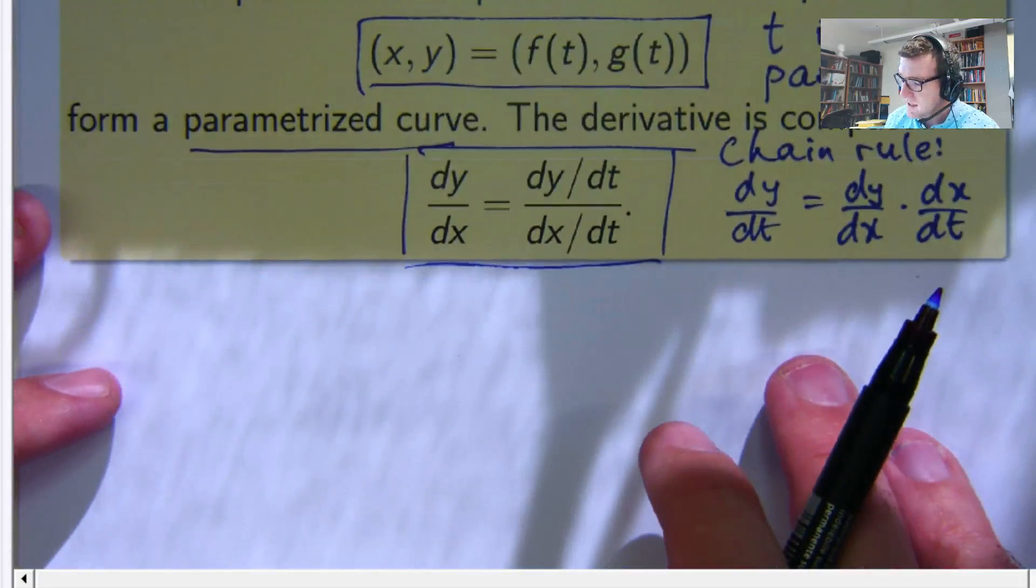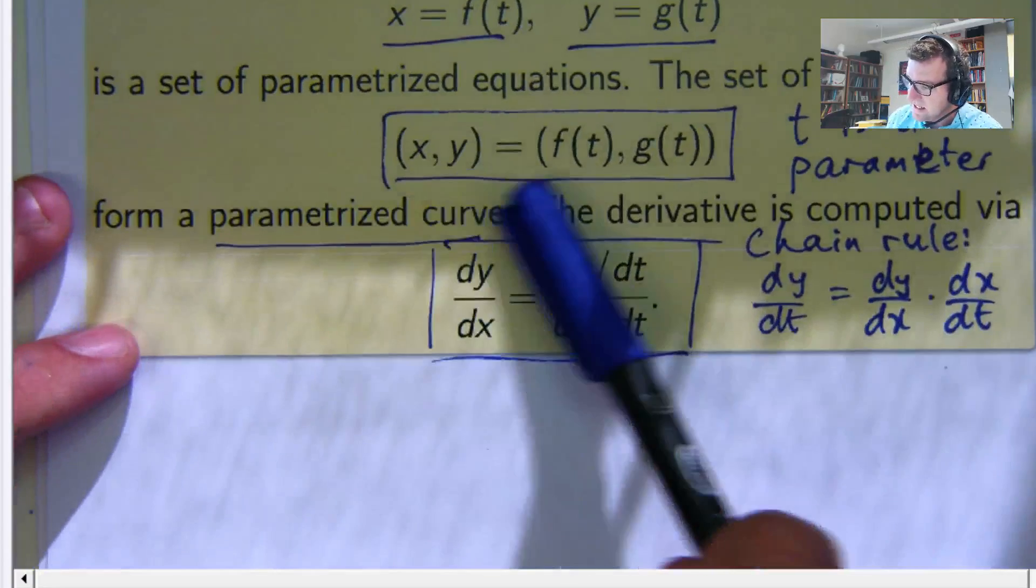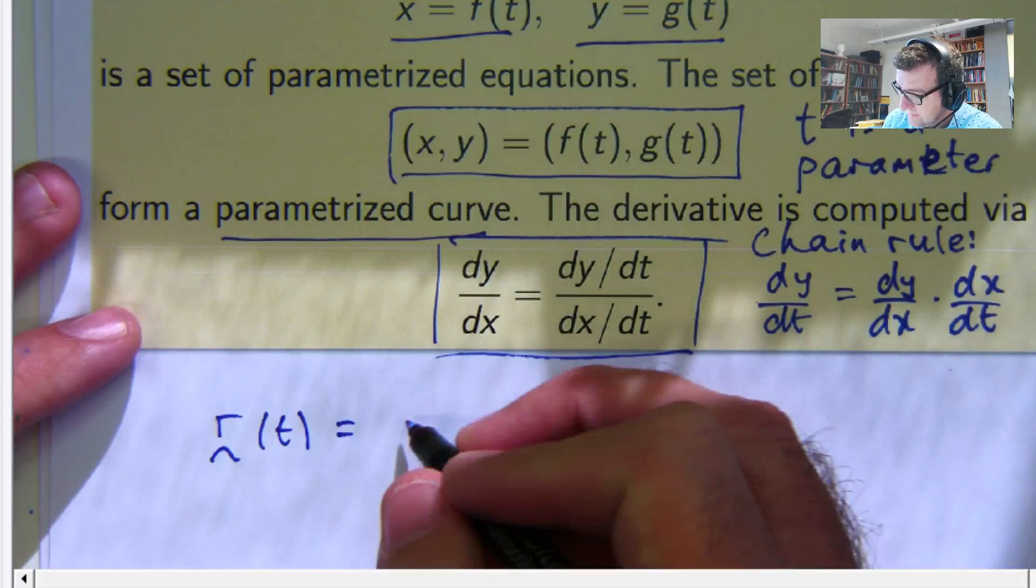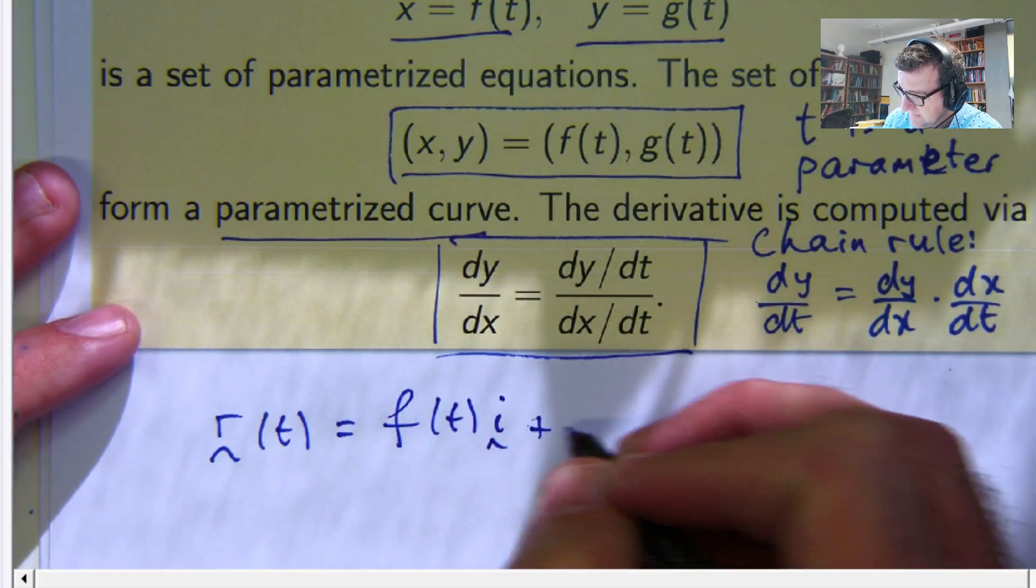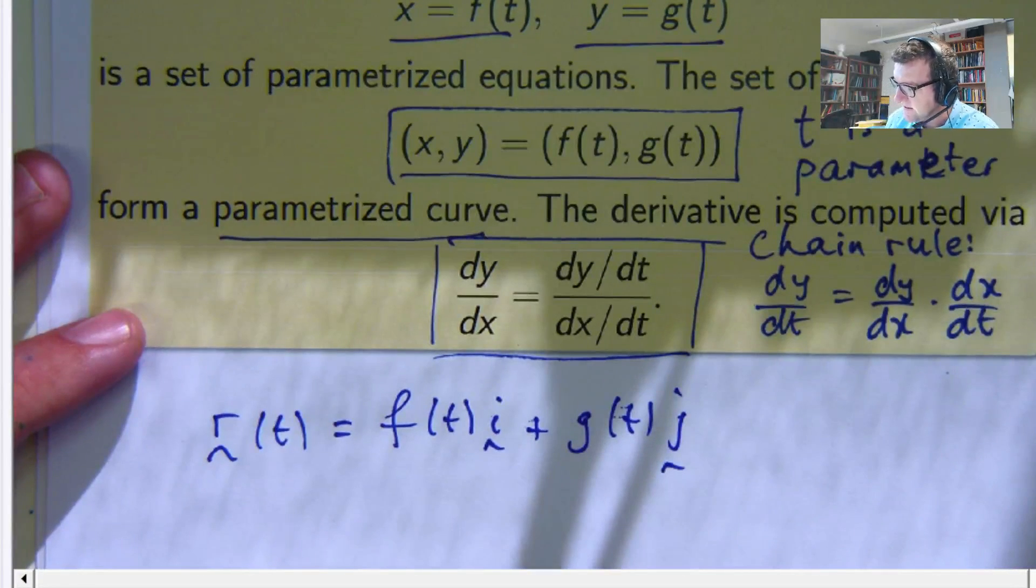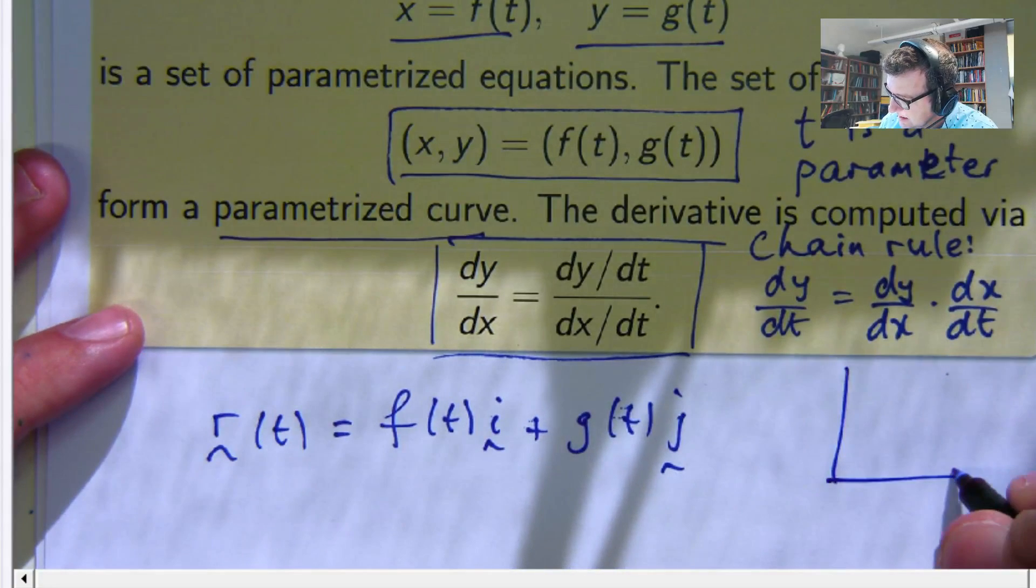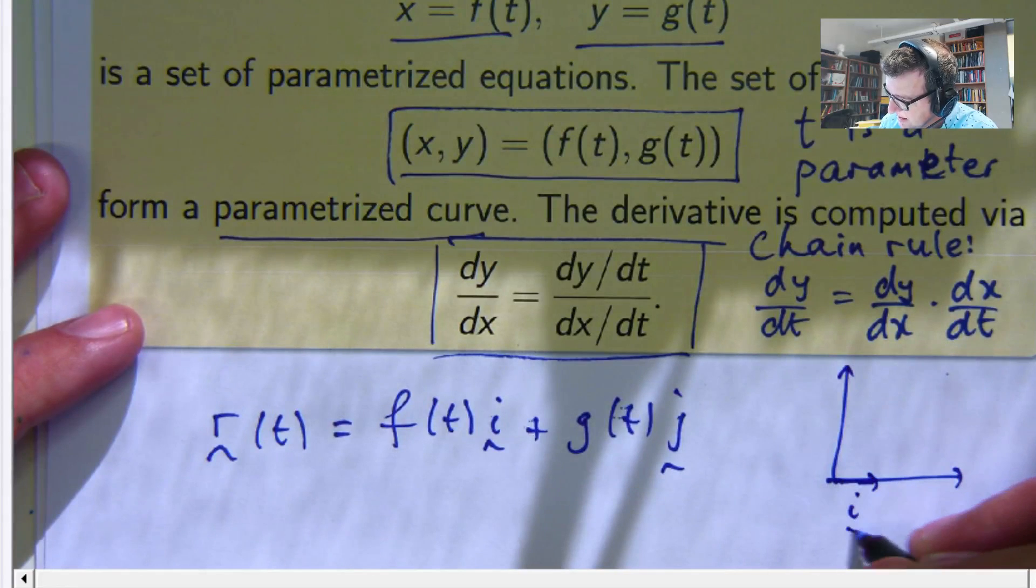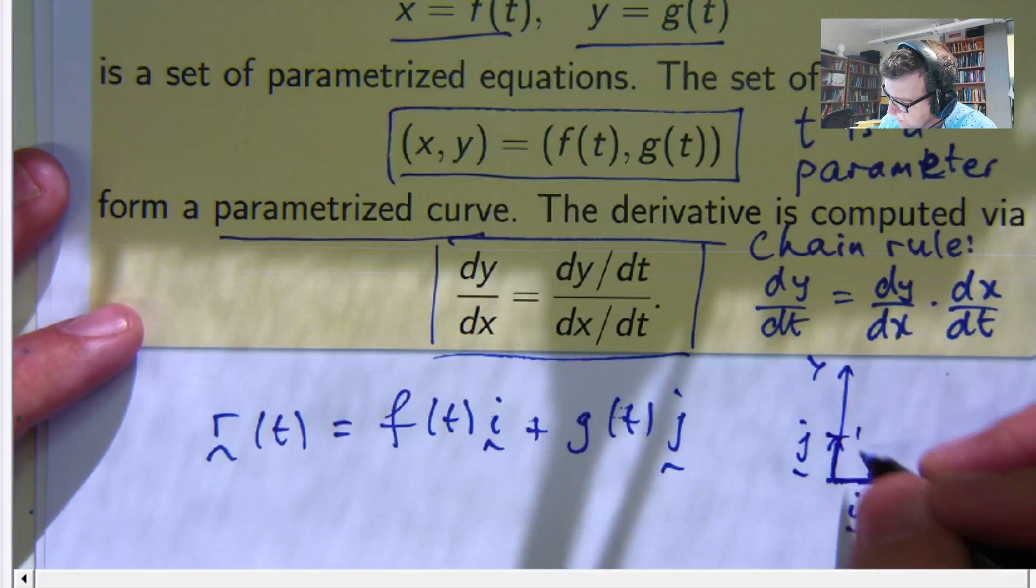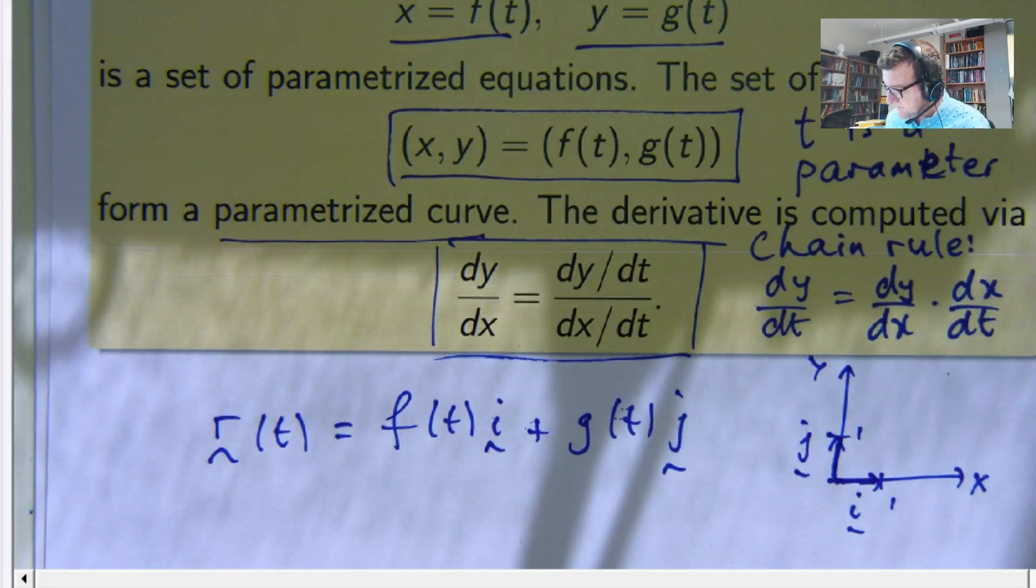Now, if you are familiar with vectors, you might know that I could actually write these in the following form. So you've kind of got your little i vector and your j vector.